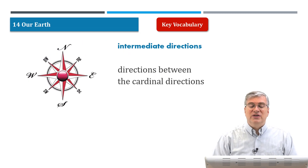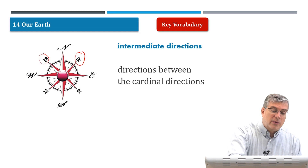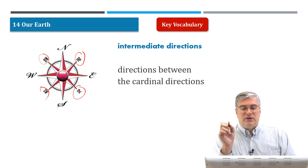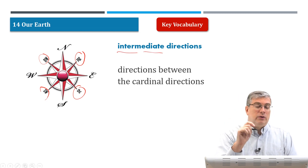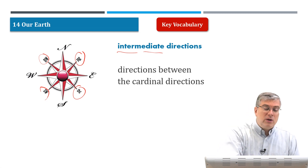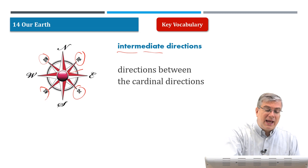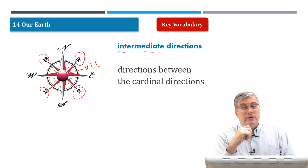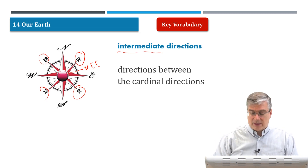Intermediate directions are the directions between the cardinal directions. We can see them on the map: northeast, northwest, southwest, and southeast — those are the intermediate directions. You can also break it down even more specifically, such as north-northeast, to be more precise. So we have cardinal directions and intermediate directions.